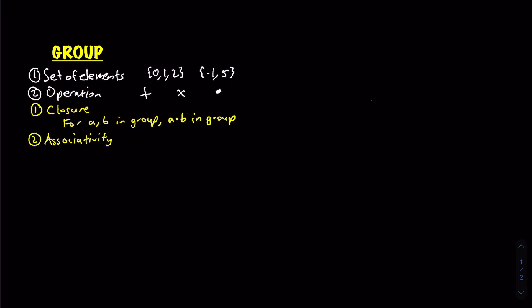Essentially, if we first do the operation on a and b and then on c, or if we first do the operation on b and c and then on a, we get the same result — the order in which we perform the operation doesn't matter. The third property is identity: there is one special element in the group called the identity element, denoted i, such that for every element a, the operation of a with i gives back a.